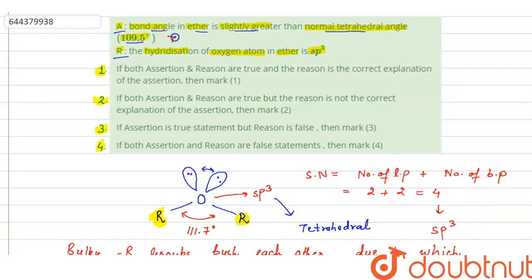Now in reason it is given hybridization of oxygen atom in ether is sp3. This is correct, hybridization is sp3, but it is not explaining the assertion. This is true but not explaining the assertion.